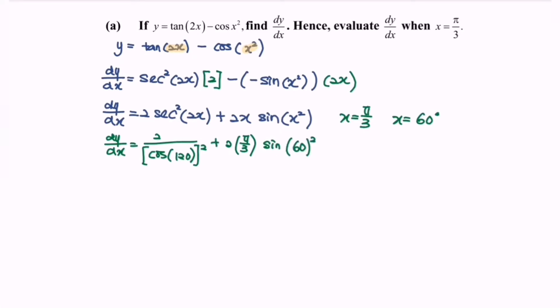Then with the help from the calculator, we can simplify the situation. dy/dx is equal to 2 over... However, as we all know, cos(120°) is equal to negative 1/2 bracket square, plus 2π/3...